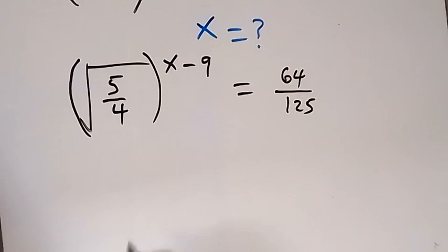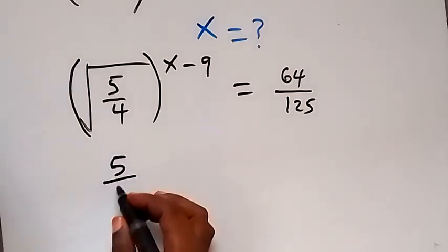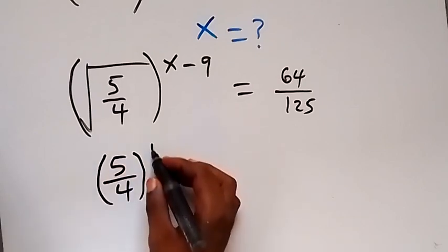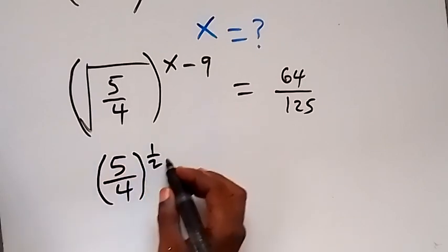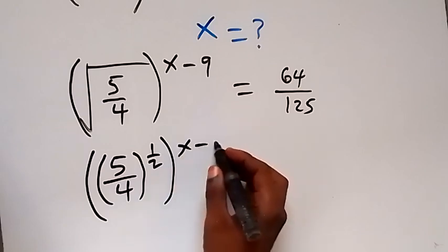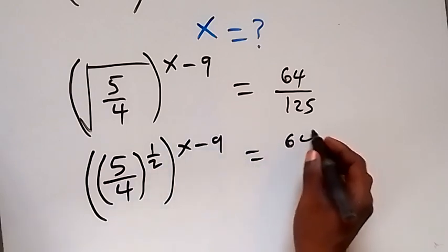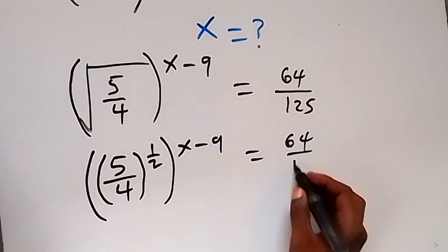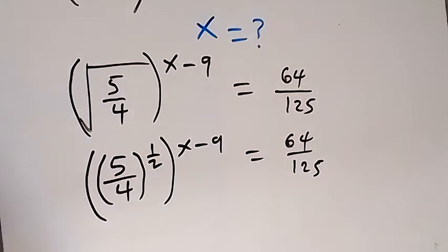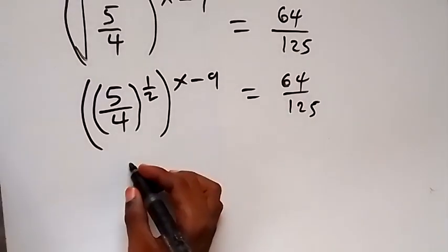So we can say this is 5 over 4 raised to power of half, which is then raised to power x minus 9, equals 64 over 125. Since these powers multiply, we can write it again as 5 over 4 raised to power x minus 9 all over 2.